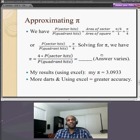Now, solving for pi, we have pi equals 4 times the probability of sector hits over the probability of quadrant hits. That will give you a unique result, and your answer will vary.